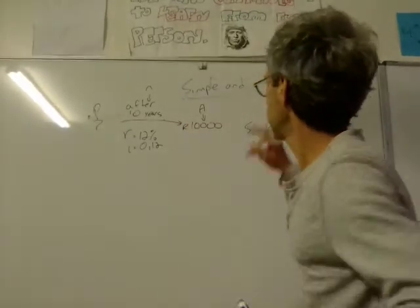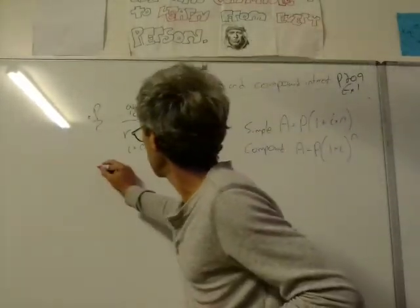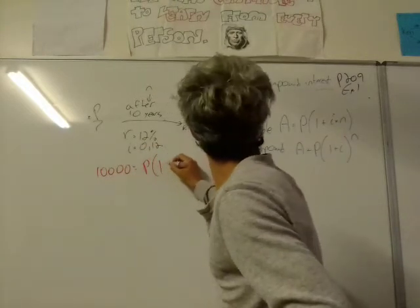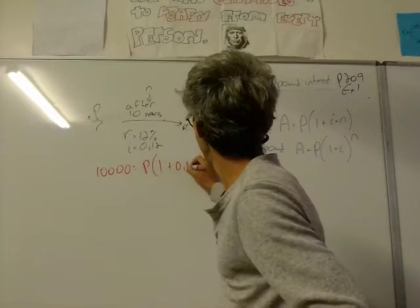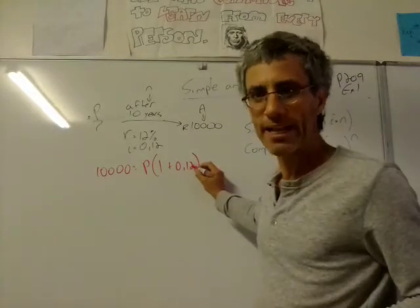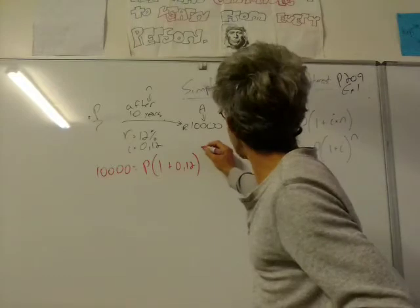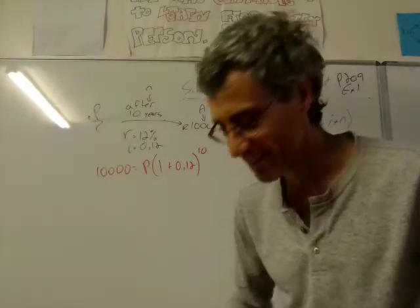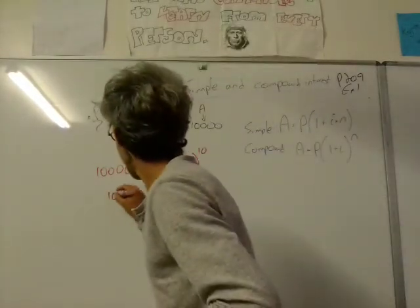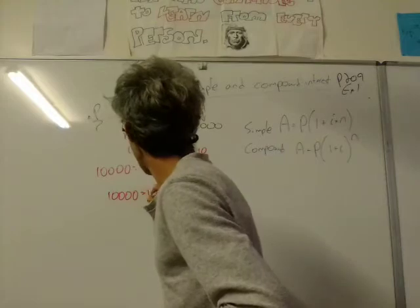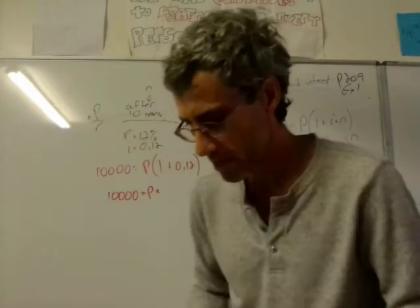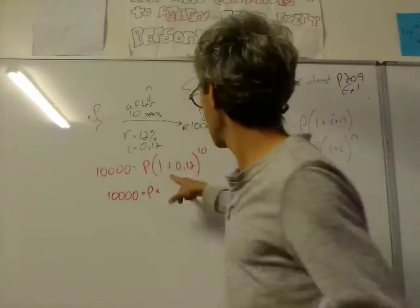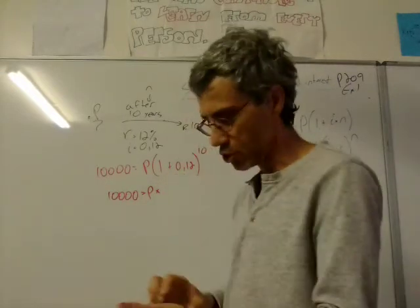So compound. Again, the amount of money that I gave in the beginning is 10,000. The P we don't know. So it's all the same. 1 plus i is 0.12. But remember, instead of timing it by n, we have to do an exponent. So power 10. For that, I will need the calculator. So I will write 10,000 equals P times. Now, you can just put this whole thing in the calculator. I would first do the bracket. You can do that in your head. 1.12, but power n. So 1.12 instead of times n, we're powering it by 10.